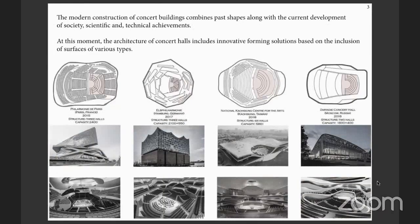The modern construction of concert buildings combines past shapes along with the current development of society, scientific and technical achievements. At this moment, the architectures are based on the inclusion of surfaces of various types. Currently, a variety of forms and transformation is being used to create unique halls, as seen in the slides.